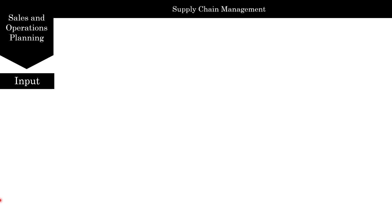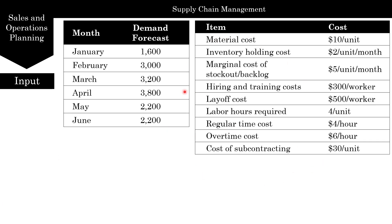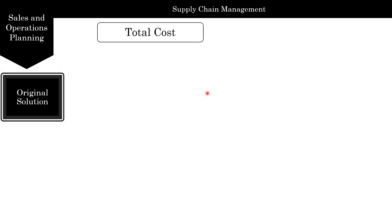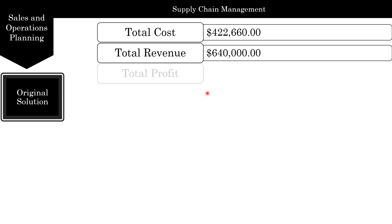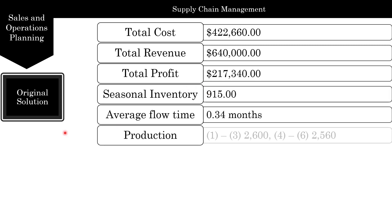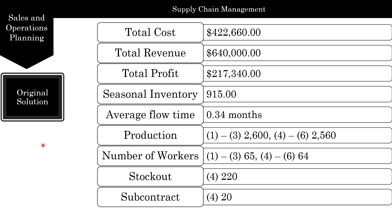For sales and operations planning, we're going to look at an example — the same example from the aggregate planning chapter, with the same demand forecast and costs. The first step is to create the aggregate plan, which we've already done. We'll focus on how to add sales promotion to the optimized aggregate plan. In the original solution, total cost was $422,000, total revenue was $640,000, and profit was $217,340. Production was 2,600 units in periods 1 to 3 and 2,560 in periods 4 to 6, with some stock-outs and subcontracting.